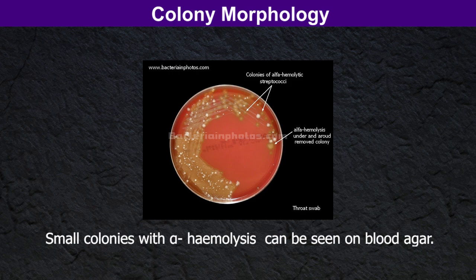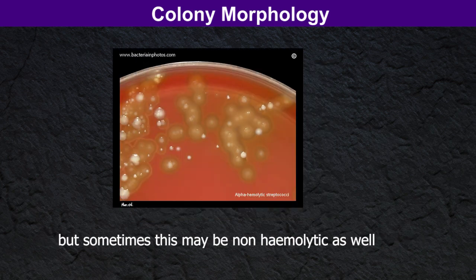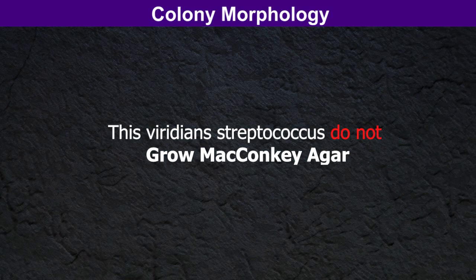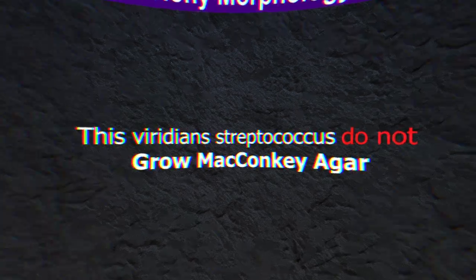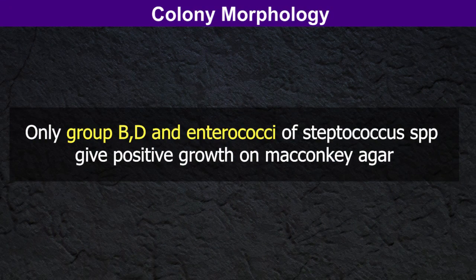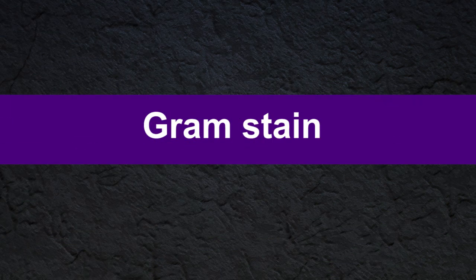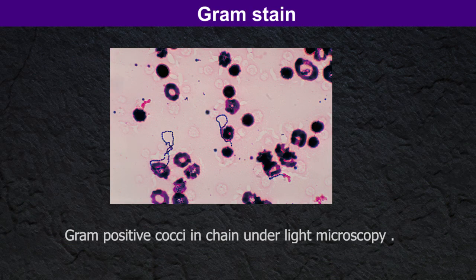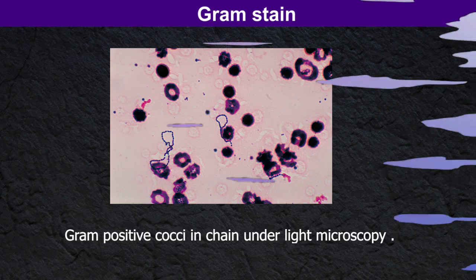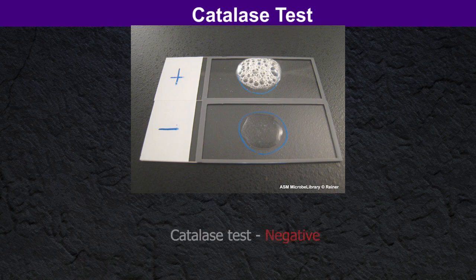To diagnose viridans streptococci in the medical laboratory, considering colony morphology, small colonies with alpha hemolysis can be seen on blood agar, but sometimes they may be non-hemolytic as well. Viridans streptococci do not grow on MacConkey agar — as we know, only group B, D, and enterococci of streptococcal species give positive growth on MacConkey agar.